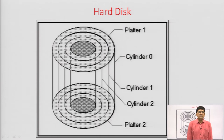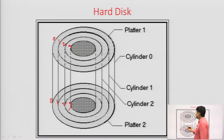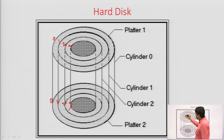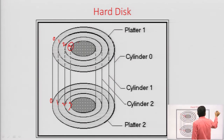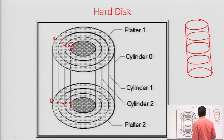We have the sector numbering or division of sectors for each surface. If we number the tracks — say 0, 1, 2, 3 and so on — the same track numbers appear on every surface. If we connect with a dotted line all the tracks with number 3 across all surfaces, this forms a virtual cylinder. So track number 3 of all surfaces forms a virtual cylinder, and data stored on the hard disk is done cylindrically.